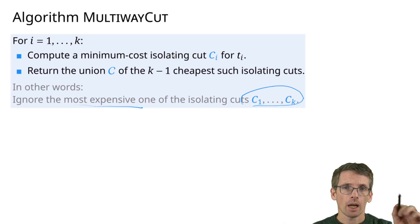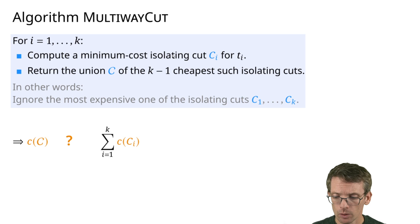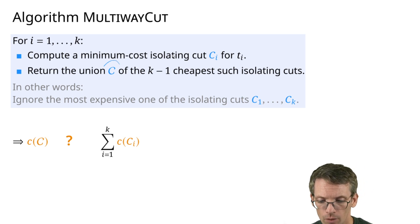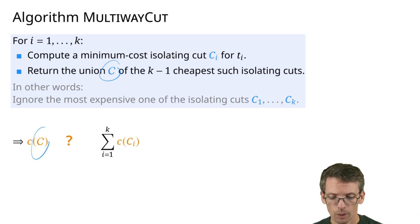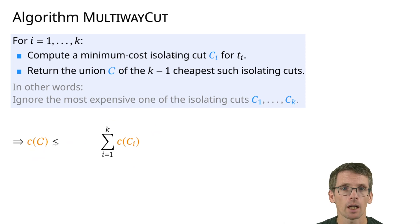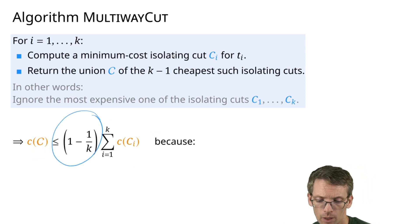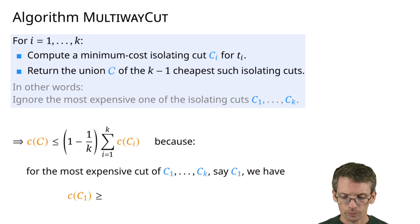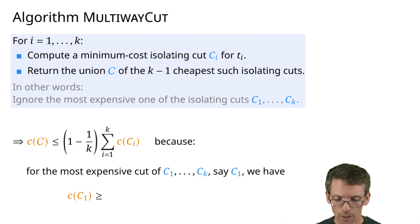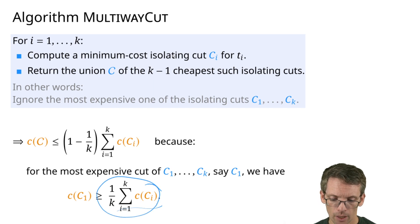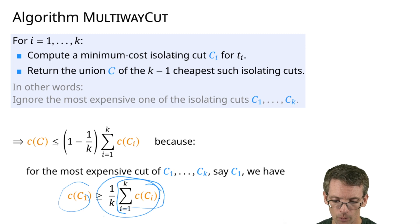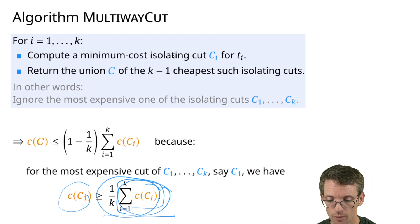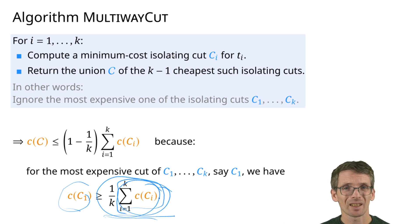If k − 1 terminals are each separated, then the remaining one is also separated. We drop one cut to reduce cost. Specifically, if we compare the union of the k − 1 cheapest cuts to the sum of all isolating cuts, we get a factor of (1 − 1/k). This is because the most expensive cut c_1 has cost at least (1/k) times the total sum — the largest must be at least as large as the average, by the pigeonhole principle.